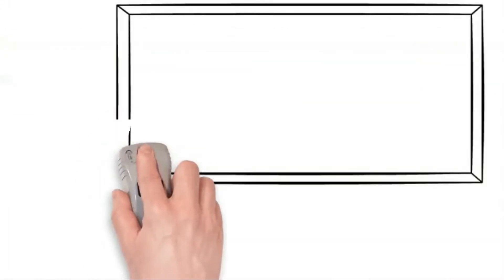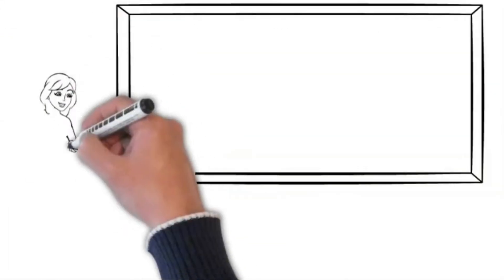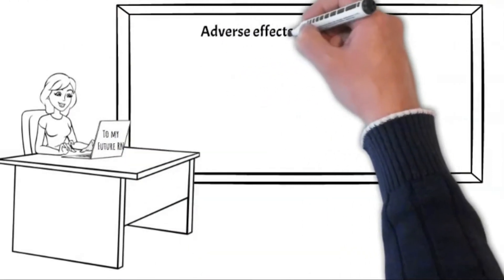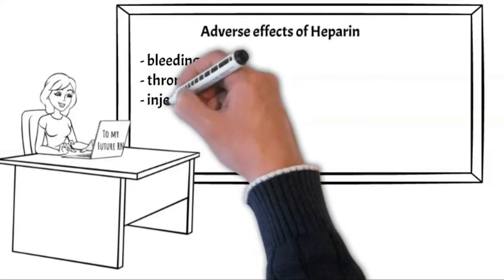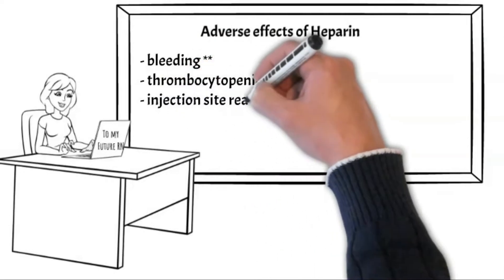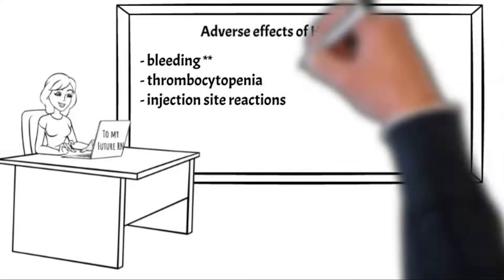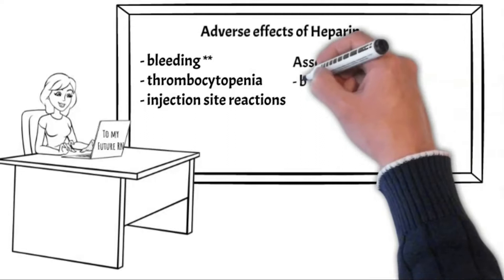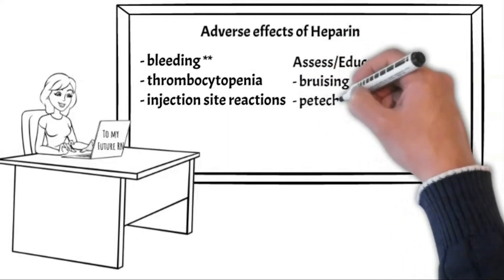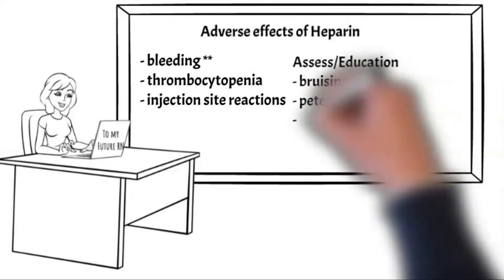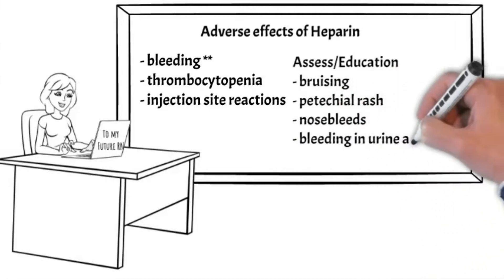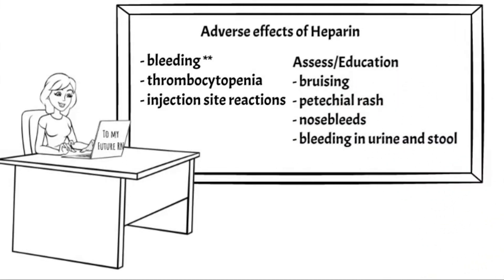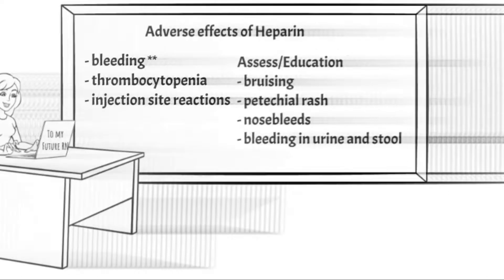Adverse reactions to heparin include bleeding, thrombocytopenia, and reaction at the injection site. Bleeding is a major complication associated with heparin use. Bleeding may also present as bruising, petechial rash, and nosebleed, so be sure to educate your patient on how to assess bleeding in the urine and stool.